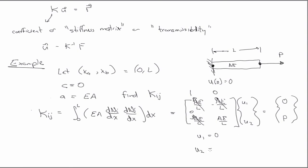Then I can just read it off, I can read off the answer. AE over L times U2 is equal to P, therefore U2 is equal to PL over AE. Which is what we know to be the solution from solid mechanics. So we can get the exact solution if the beam has a constant cross section, we can get the exact solution with just one element.